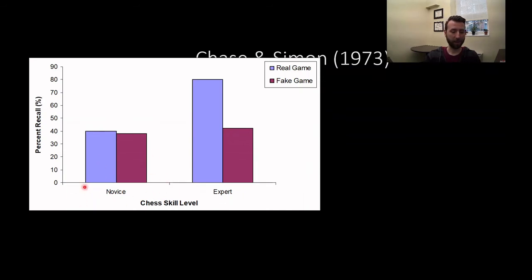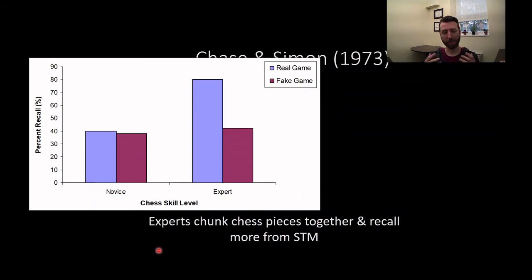And then novices, so people who have no experience really with chess, we see no difference between their memory for a real game and a fake game in terms of recalling the number of pieces. But what we see with the experts is they show a much stronger memory for real chess board configurations over fake chess board configurations. Because the configuration of those chess pieces together was meaningful. They were able to chunk chess pieces together because of the relationships between those chess pieces and what that might mean and recall better from their short term memory. In the same way that you or I can take acronyms of common organizations and remember them as meaningful pieces of information, people with enough expertise in chess could take configurations of chess pieces and chunk them together in terms of their meaning. A novice can't do that because the chess piece relationships have no meaning to them.